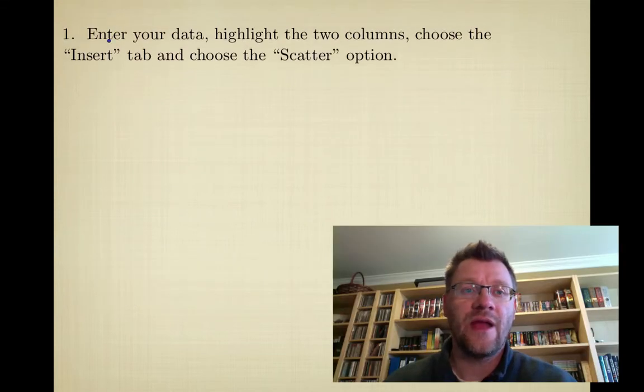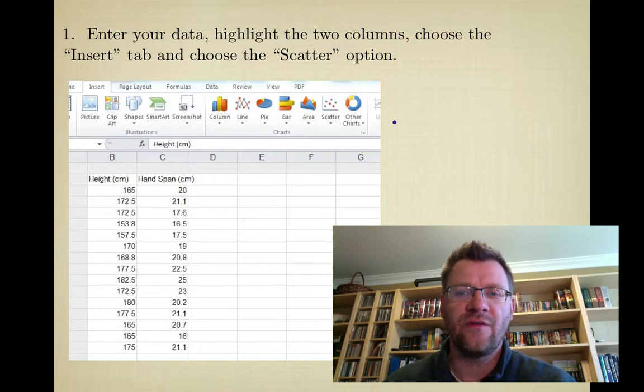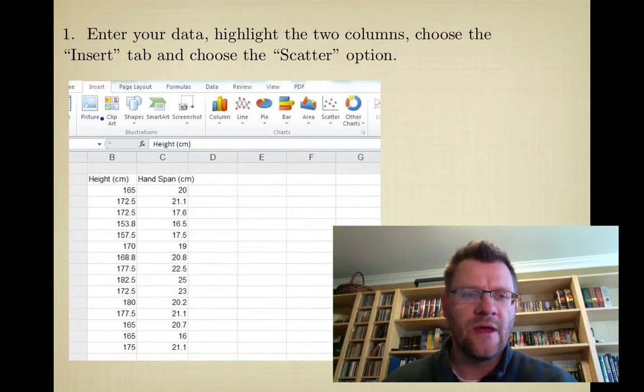First, you want to enter your data, highlight the two columns of that data, choose the Insert tab, and then choose the Scatter option. Because I don't run Microsoft Excel on this laptop, I just took some screenshots from my home computer. So I've entered the data here, you need to highlight it—you can even include the titles—and then go up to the Insert tab and over to the Scatter option.